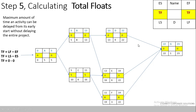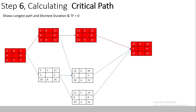In Step 6, the last step, we identify the critical path, shown in red. The critical path is the longest path with the shortest possible duration, and the total float on the critical path is always zero. Applying this: Activity A has 0 total float, Activity B has 0, Activity D has 0, and Activity G has 0 — forming the critical path A → B → D → G. This path finishes on day 23, which is the total project duration. These six steps allow you to calculate the critical path of any network diagram in a simple, step-by-step way.